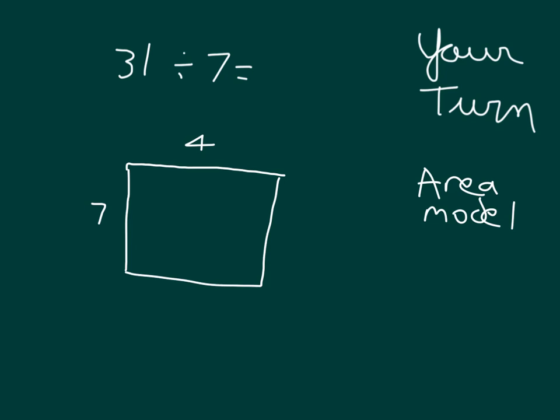And then we have 4 times 7, which is 28. That's why you write 28 within there. And then how many more to get up to 31? 29, 30, 31. Therefore, our remainder is here, which is 3. So we have our answer there of 4, quotient 4, with a remainder of 3.